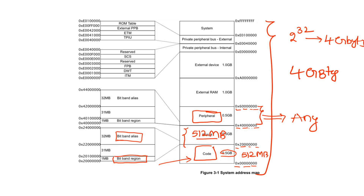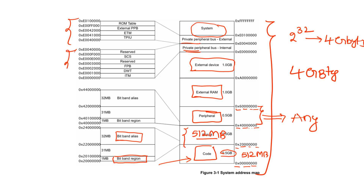The next 1GB of memory is allocated to external RAM, where you can connect external RAM. The next 1GB is allocated to one more external device. After that, some memory is allocated to system-related operations, and the remaining portion is allocated to the private peripheral bus. This is how the memory is allocated to different regions of the ARM Cortex-M4 with their addresses. These addresses and memory allocations are fixed by the designers of ARM Cortex-M4.